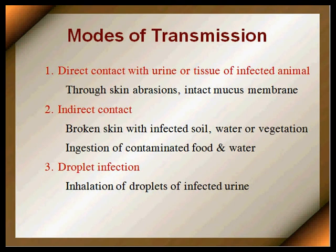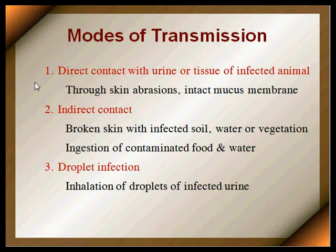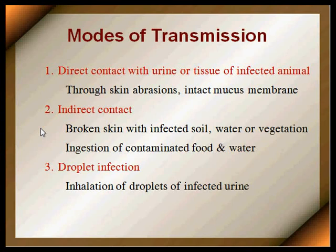Regarding modes of transmission: direct contact with the urine or tissues of an infected animal is the primary mechanism, entering through skin abrasions or intact mucous membranes of the GI tract or respiratory tract. Indirect contact occurs when broken skin contacts infected soil, water, or vegetation. Ingestion of contaminated food and water can lead to infection through the GI tract. Droplet infection through inhalation of infected urine droplets is possible, but it is not a very efficacious method of transmission.